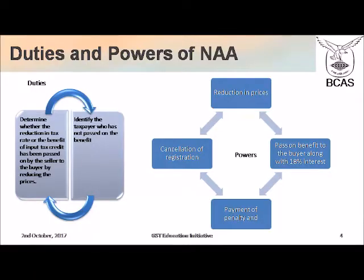For these purposes, the National Anti-Profiteering Authority has been granted powers to: number one, ensure that prices are reduced; number two, pass on the benefit to the buyer along with interest if any; and number three, impose penalty on the defaulting supplier and even cancel his GST registration.